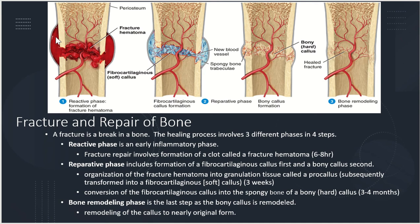The second phase is the reparative phase, which includes the formation of the fibrocartilaginous callus first, and then a bony callus second. The organization of the fracture hematoma develops into granulation tissue called a procallus, which subsequently transforms into the fibrocartilaginous callus, or soft callus — this takes about three weeks after the break. The next step is the conversion of the fibrocartilaginous callus into the spongy bone of the hard callus, and this conversion takes anywhere from three to four months.